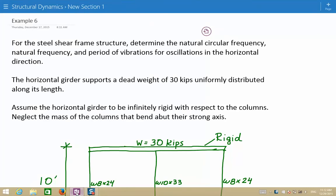Hi everybody, this is example number six in the structural dynamics section. The problem statement that we have is, for the steel shear frame structure, determine the natural circular frequency, the natural frequency, and the period of vibrations for oscillation in the horizontal direction.